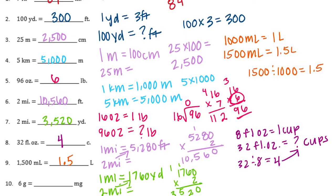6 grams is equal to how many milligrams? 1 gram is equal to 1,000 milligrams. So for 6 grams, we need to multiply 6 times 1,000 and we would get 6,000 milligrams.